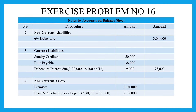Non-current liabilities: debentures are 3,00,000 rupees, as they extend beyond one year. Current liabilities: sundry creditors are 50,000 rupees, bills payable are 38,000 rupees, and debenture interest due (outstanding adjustment — 6 months half-year interest) is 9,000 rupees. Total current liabilities are 97,000 rupees.